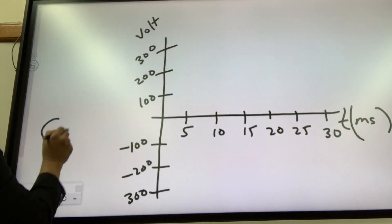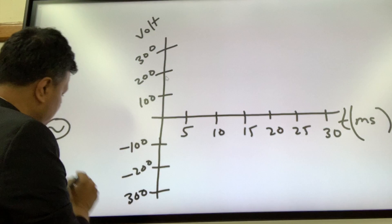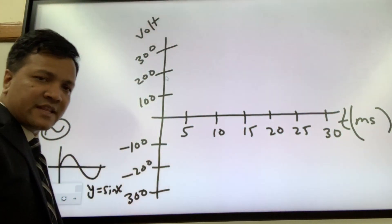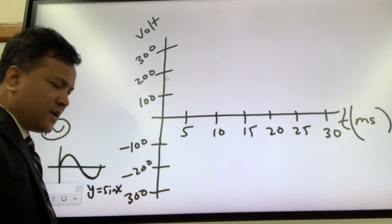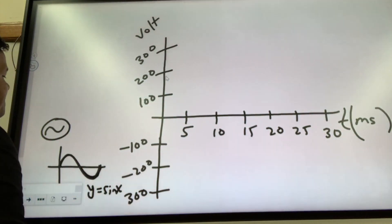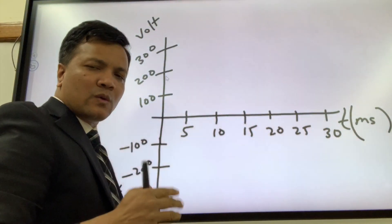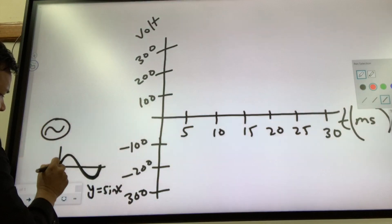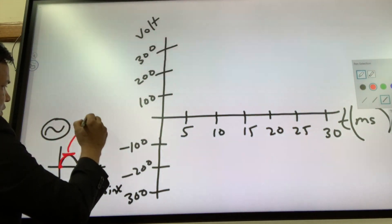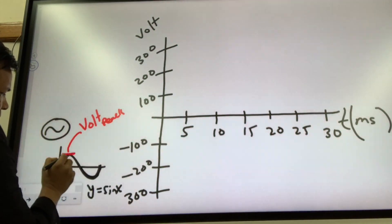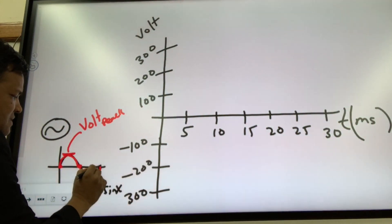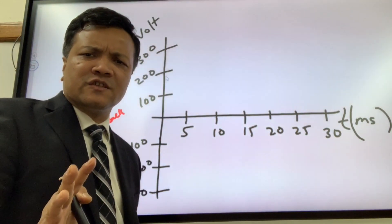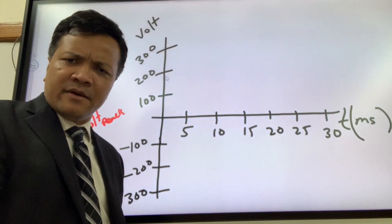The AC voltage follows a sine curve — y equals sine x, or sine theta. This is one complete cycle. We're going to draw two sinusoidal curves: one to represent 50 hertz and one to represent 60 hertz. Voltage starts at zero, goes up to a peak, comes back to zero, drops to a negative peak, and returns to zero. The voltage is never constant — unlike a DC circuit. This average effective value is called RMS, and we'll cover that idea in the next video.